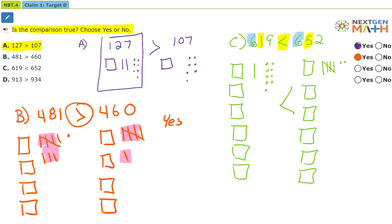So that's correct. 619 is smaller than 652. So we're going to mark that yes.